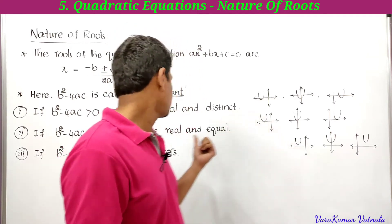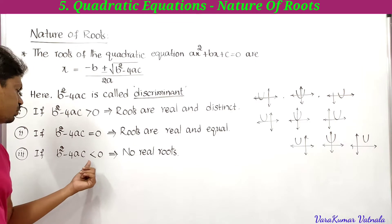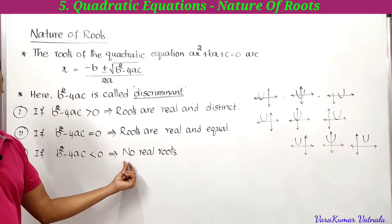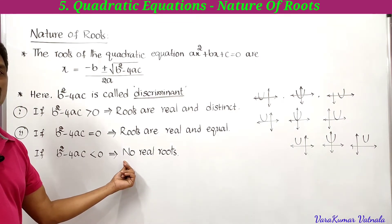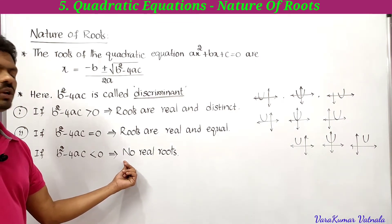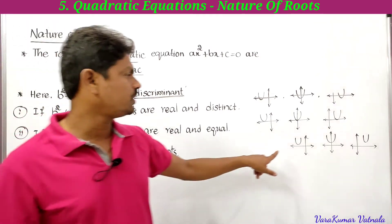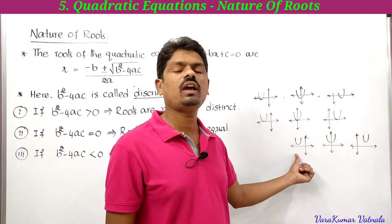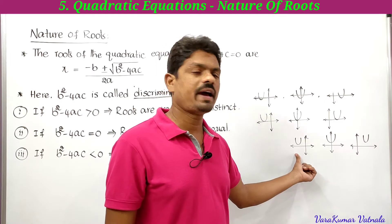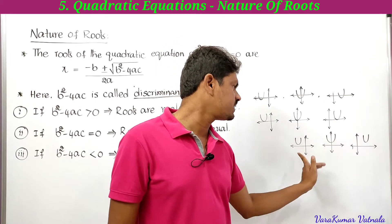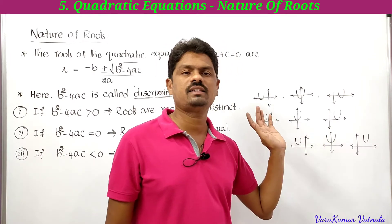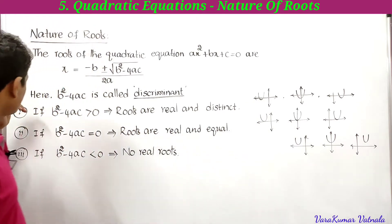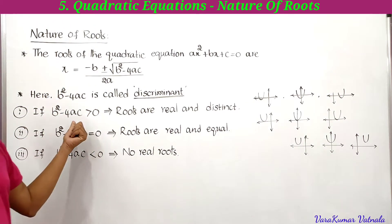If b²-4ac is less than 0, there are no real roots. If we draw the graph, the parabola does not intersect the x-axis at all, hence there are no real roots.